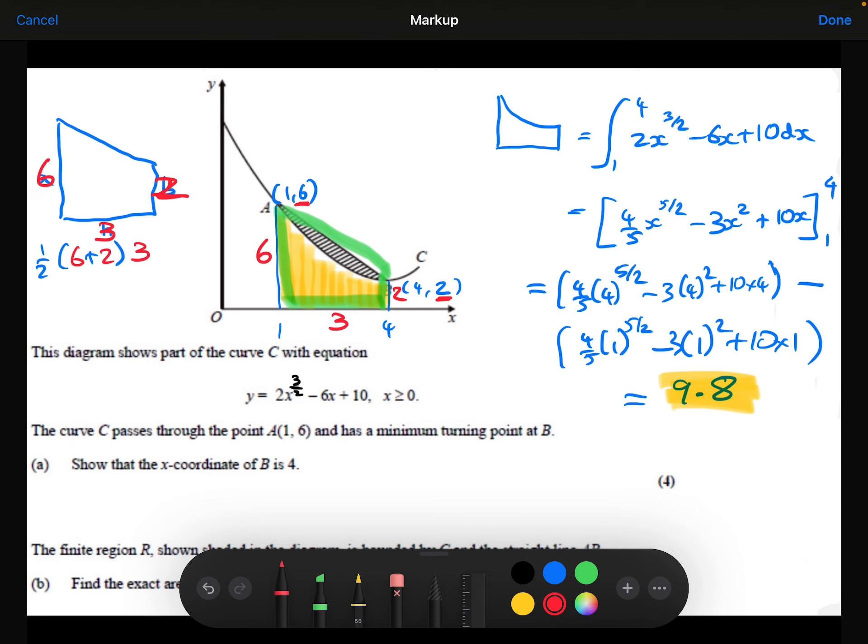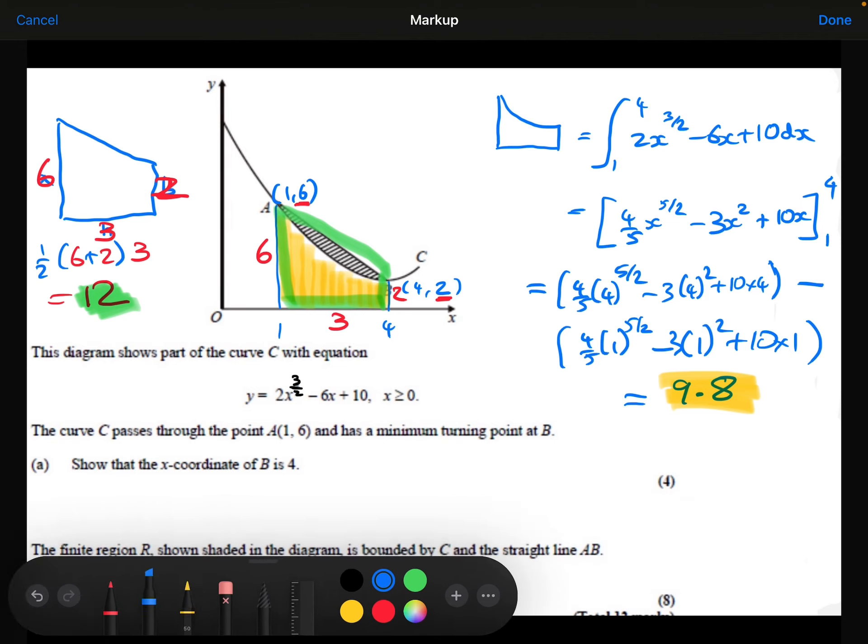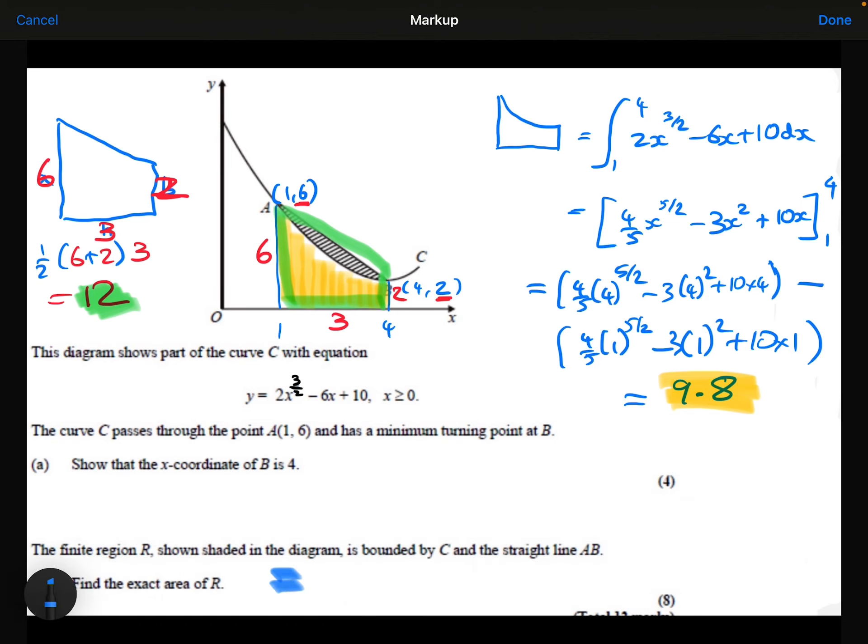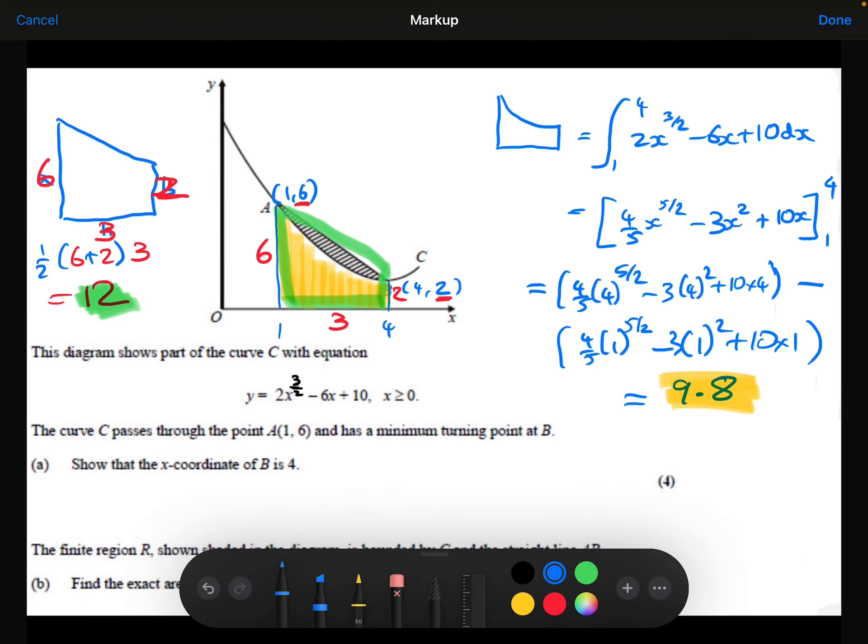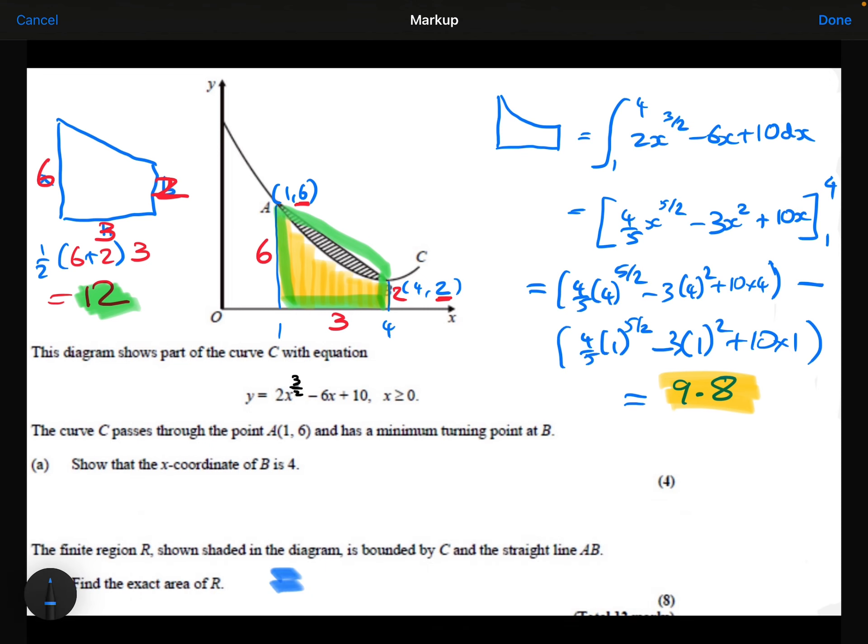So half of 6 plus 2 times 3 is 12. So the area of the green trapezium is 12. Therefore, the shaded area is going to be the trapezium take away the area underneath the curve, which is 2.2.